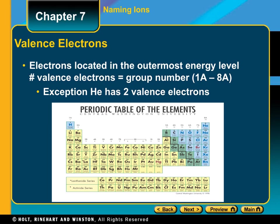Looking at the periodic table, you can determine the valence electrons for any element depending on what column they're in. The valence electrons are the electrons in the outermost energy level, and these are the ones that are free to be gained, lost, or shared in bonds. Depending on what column in the periodic table the element is in is what determines its charge.